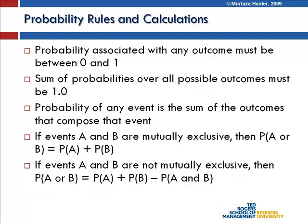The probability associated with any outcome must be between zero and one, and the sum of all possible outcomes must equal one. For example, if you toss a fair coin, the probability of getting heads or tails is 0.5, and 0.5 plus 0.5 equals one. The probability of any event is the sum of the outcomes composing that event. If events A and B are mutually exclusive, then P(A or B) = P(A) + P(B). If they are not mutually exclusive, then P(A or B) = P(A) + P(B) − P(A and B).